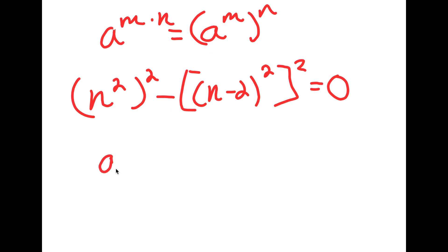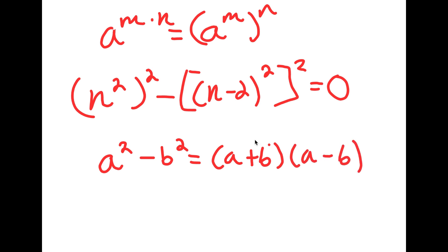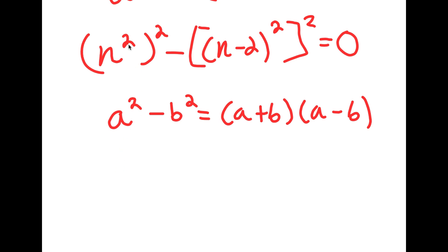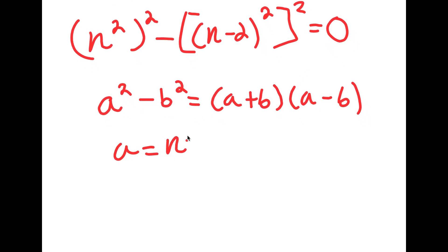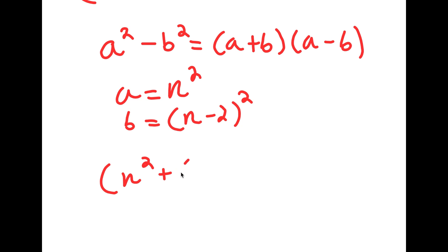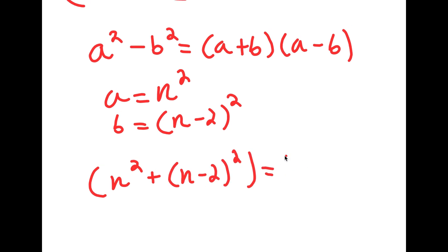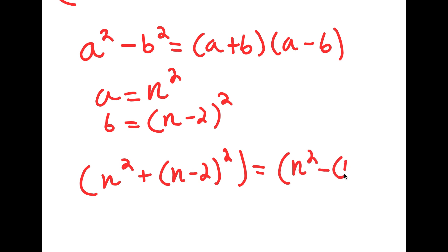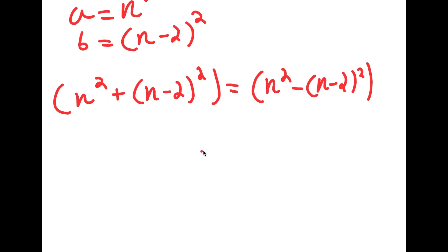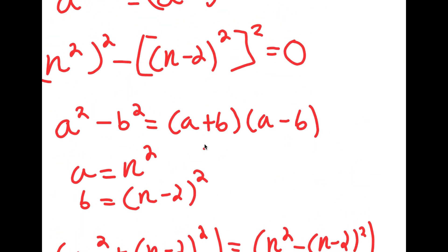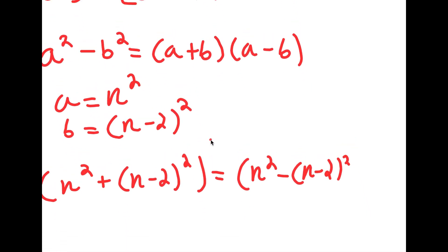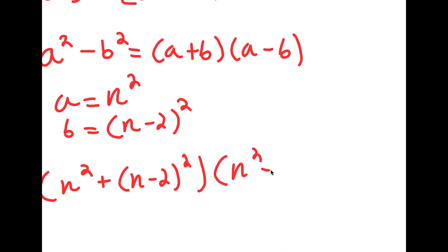Now, if I have something in the form a squared minus b squared, this is equal to a plus b times a minus b. So in this case, I have n squared to the power of 2 minus n minus 2 squared to the power of 2. We can think of a as n squared and b as n minus 2 squared. So this is going to equal n squared plus n minus 2 squared times n squared minus n minus 2 squared, all equal to 0.